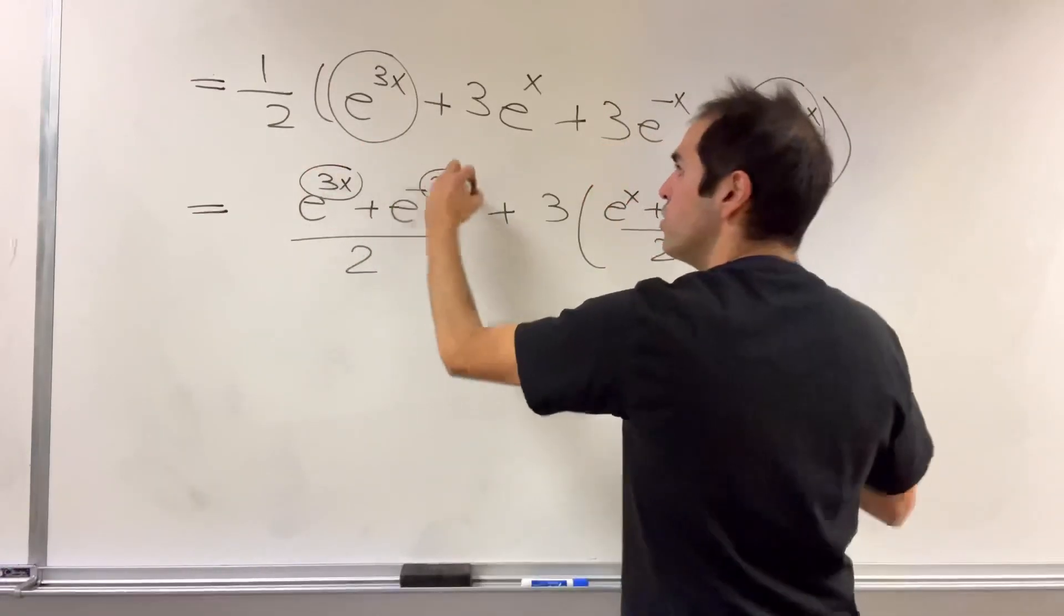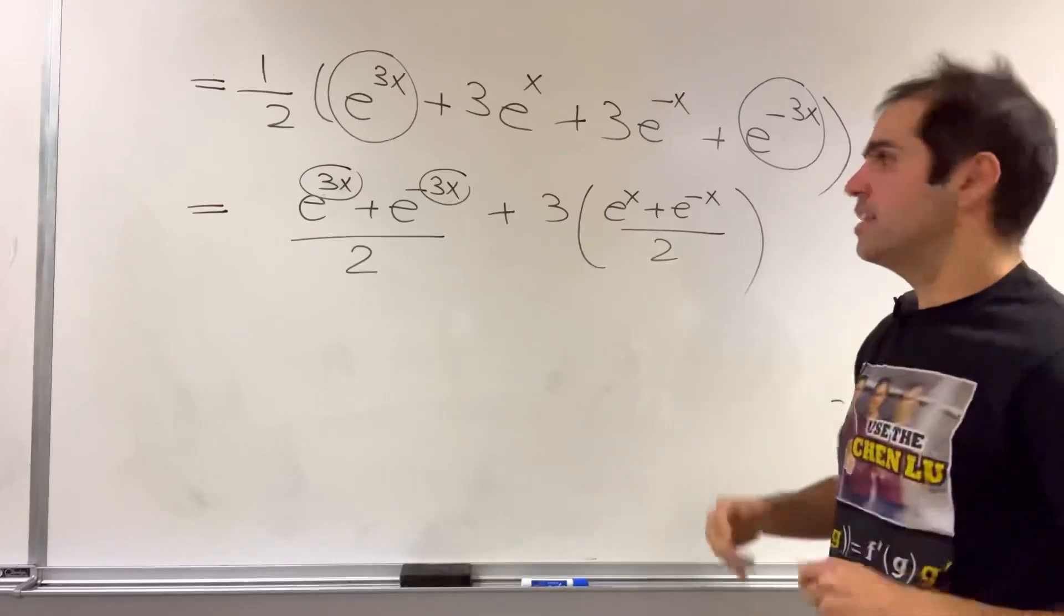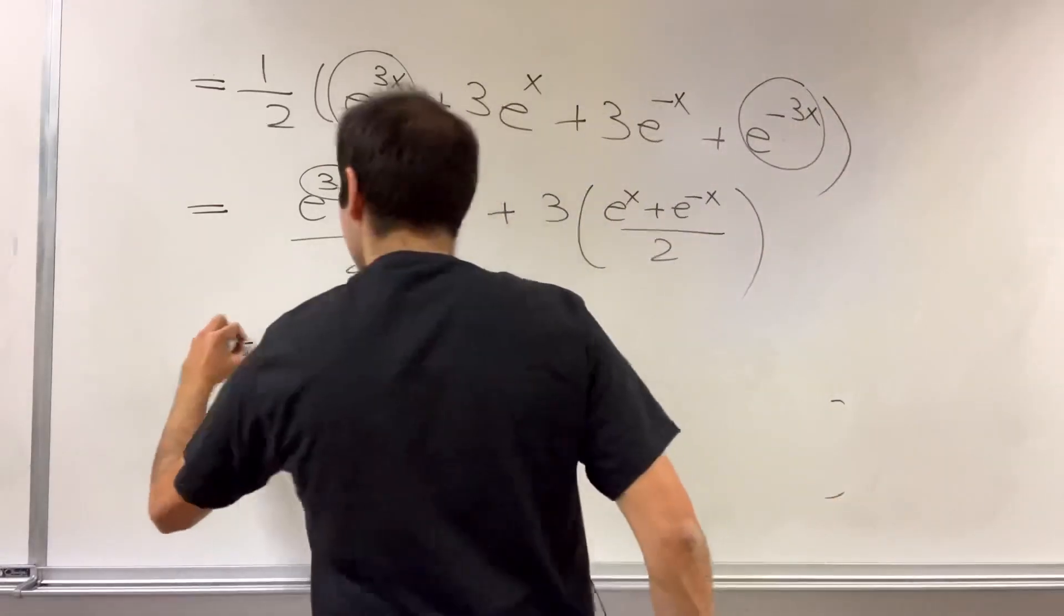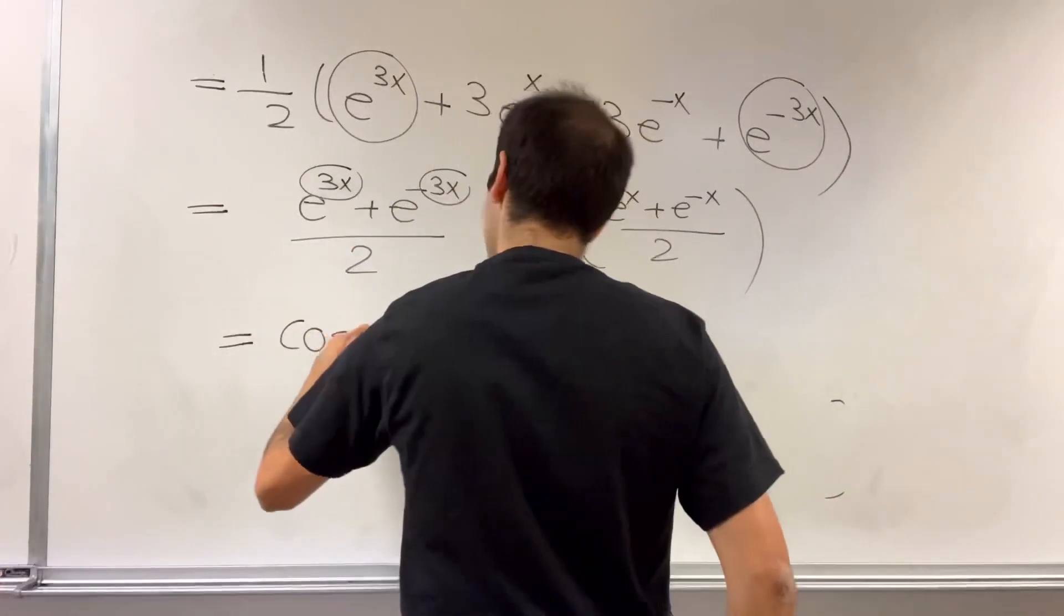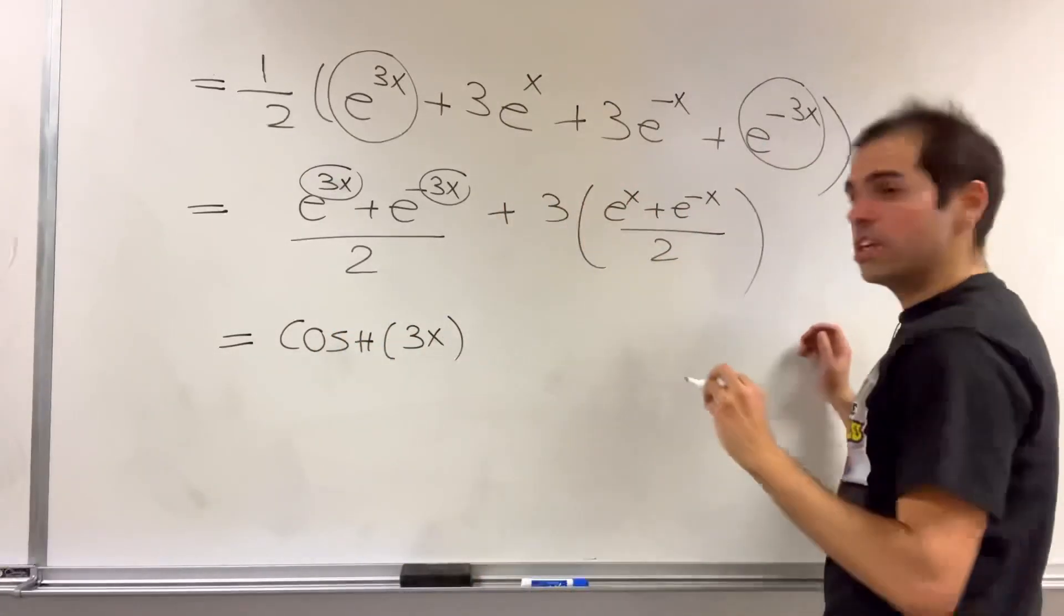Because this is e to the 3x plus e to the minus 3x over 2. So just cosh of 3x, and this is just 3 cosh of x.